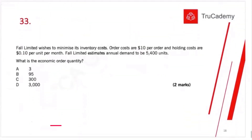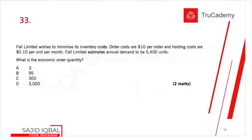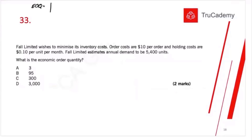Now, how to determine the order size. Here is the formula: EOQ — Economic Order Quantity — is the square root of two times demand multiplied by ordering cost, divided by holding cost.